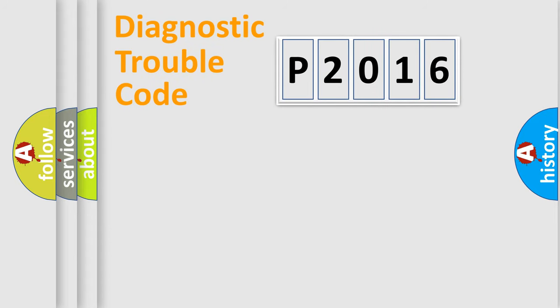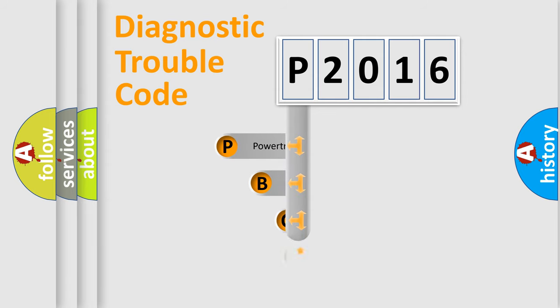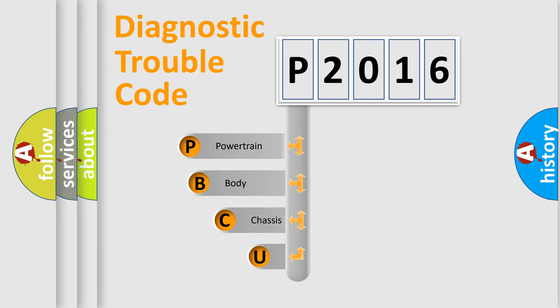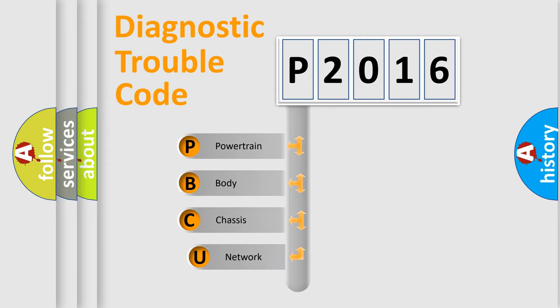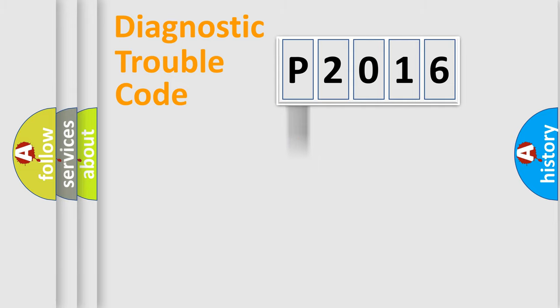Let's look at the history of diagnostic fault code composition according to the OBD2 protocol, which is unified for all automakers since 2000. We divide the electric system of an automobile into four basic units: Powertrain, Body, Chassis, and Network.